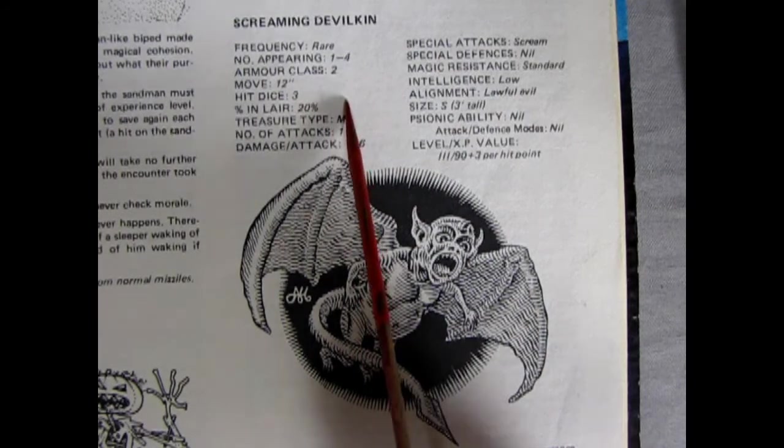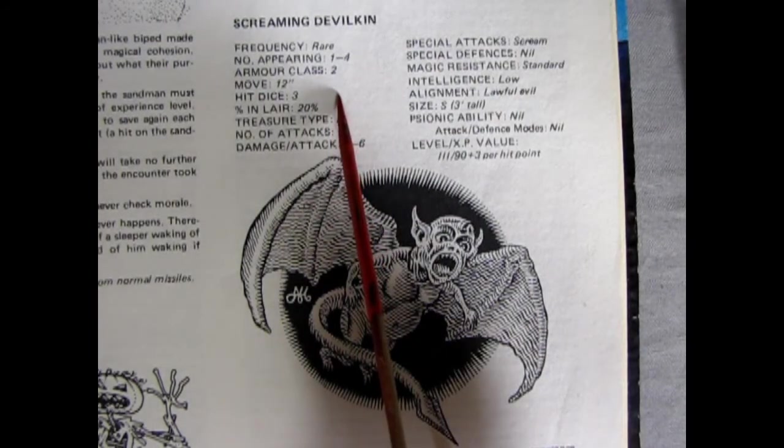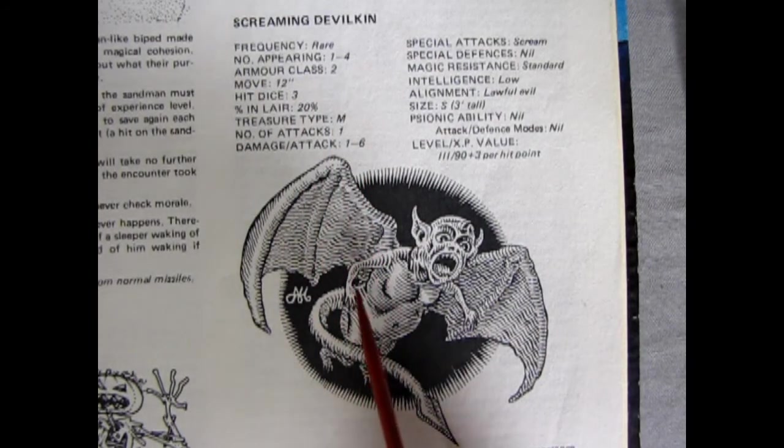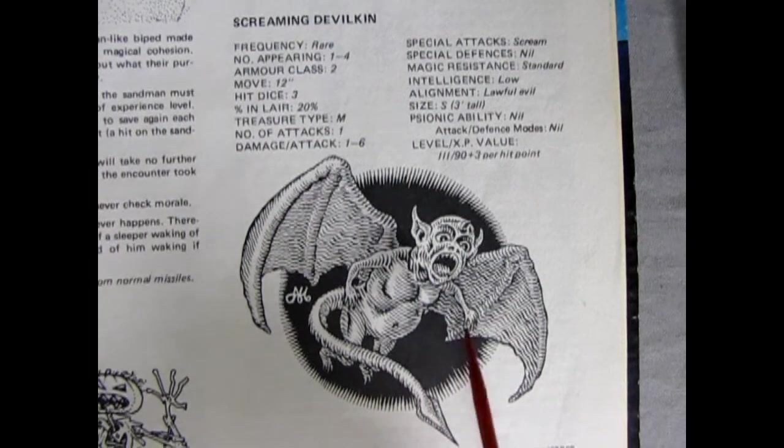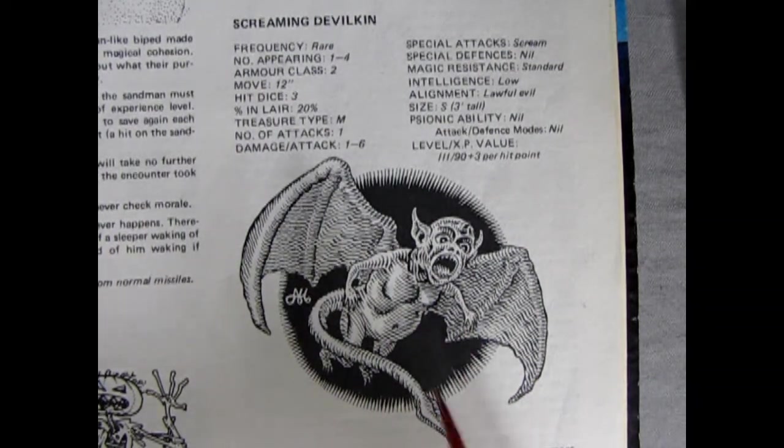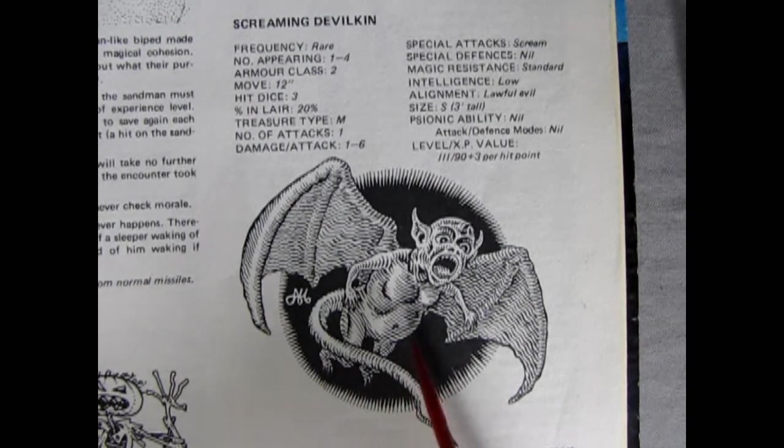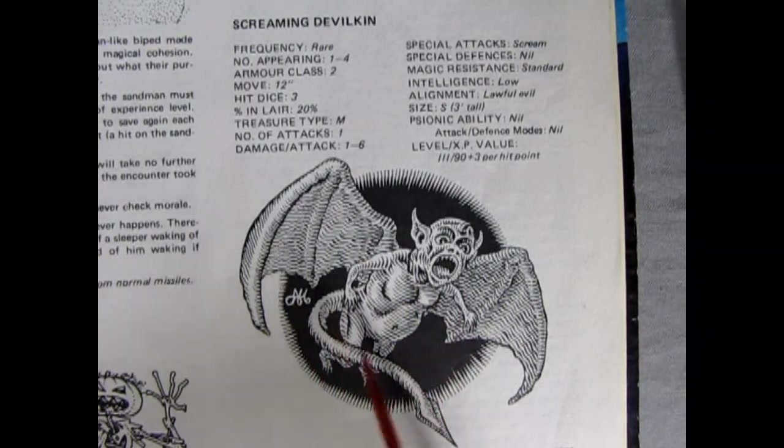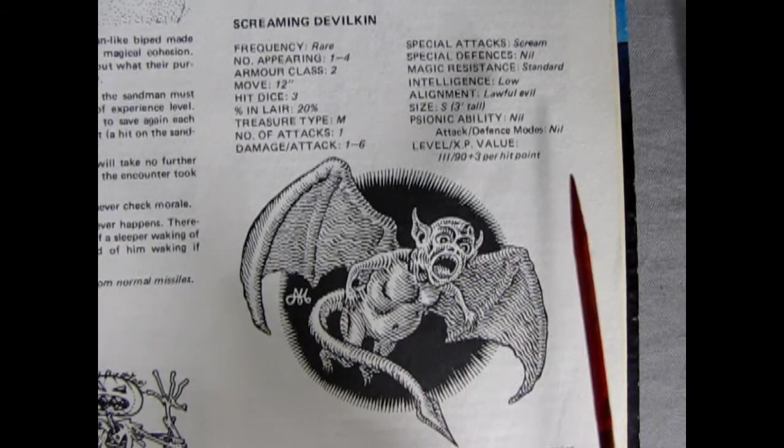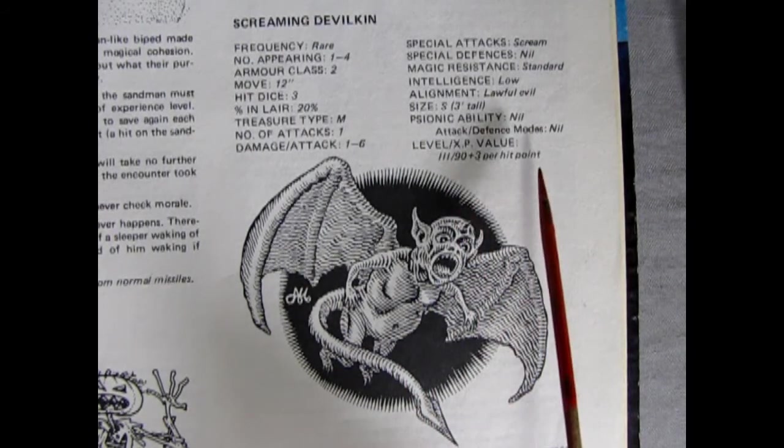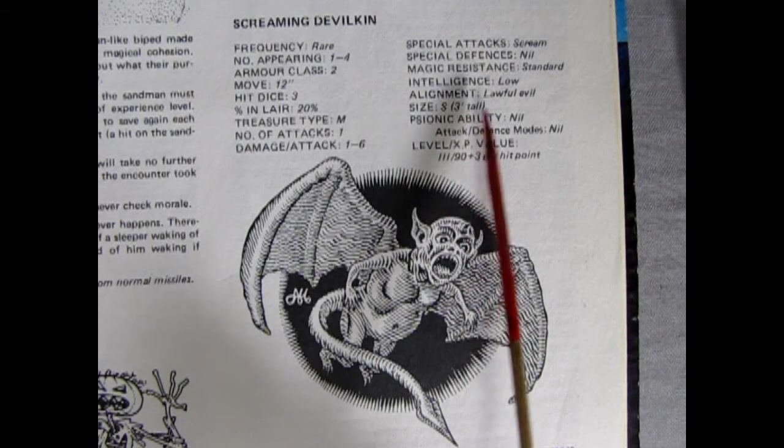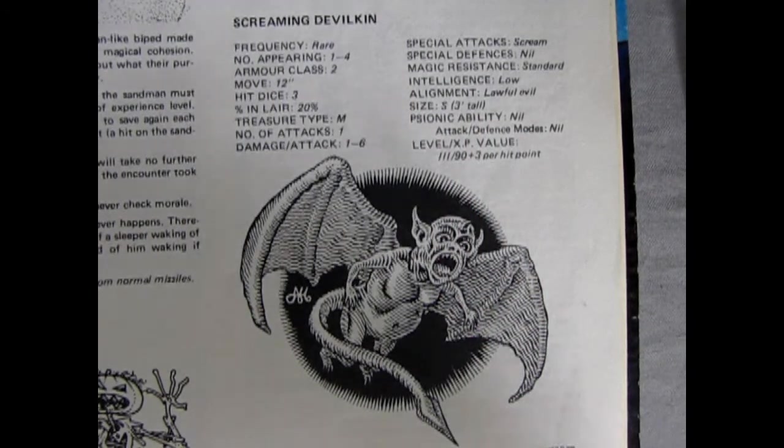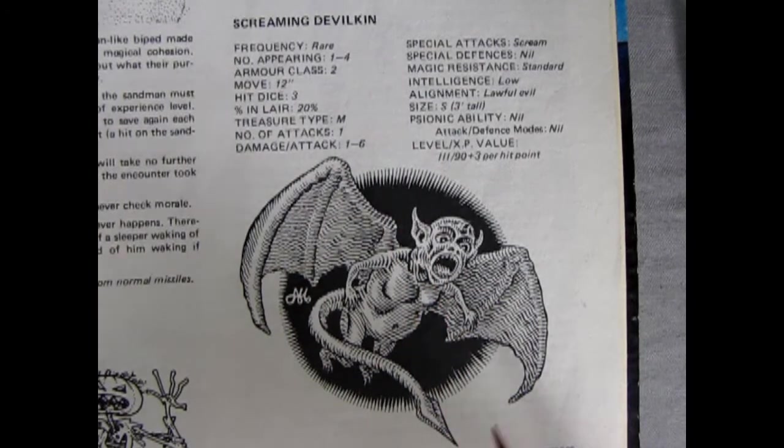Armor class is two, which is the equivalent for this thing to wear a plate mail and a shield if you were to come up against it. So as you can see, this doesn't really have plate mail and shield, but I would guess that it has a pretty tough hide. And because it's flying, it would be hard to hit. Also because it is a small creature, as it says on here, size small, it's only three feet tall or less. So that's why they gave it the armor class rating of two.